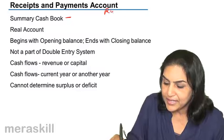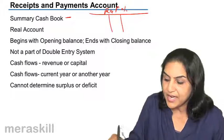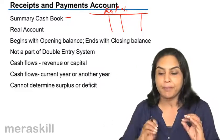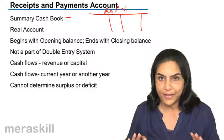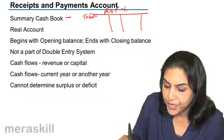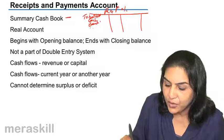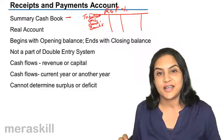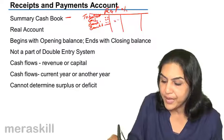The format is something like this: receipts and payments account. Though we say it's an account, it is actually just a summary cash book. It is not that by preparing the receipts and payments account we are completing any double entry — we are not. It begins with the balance brought down: what is the cash balance, and what is the balance in bank one, bank two, wherever the not-for-profit organization has its accounts. These are the opening balances of cash or bank.